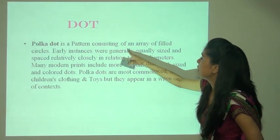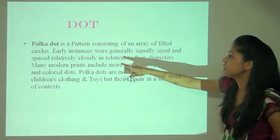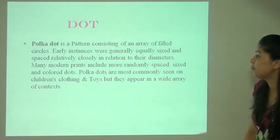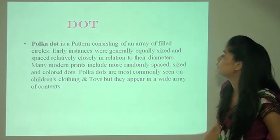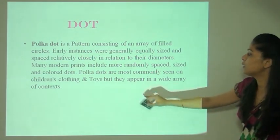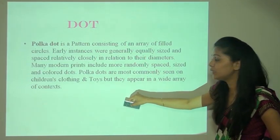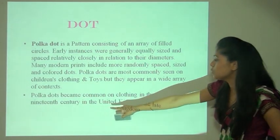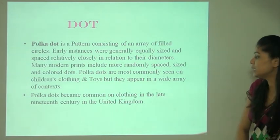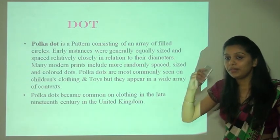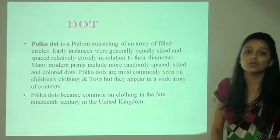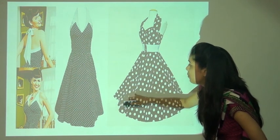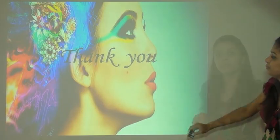Polka dot is a pattern consisting of an array of filled circles — early instances were generally equally sized and spaced relatively closely in relation to their diameters. Many modern prints include more randomly spaced, sized, and colored dots. Polka dots are most commonly seen on children's clothing and toys but appear in a wide array of contexts. Polka dots became common on clothing in the late 19th century in the United Kingdom. Dot ka bahut zyada use hota hai garments mein — both garments are looking elegant just because of using dots.